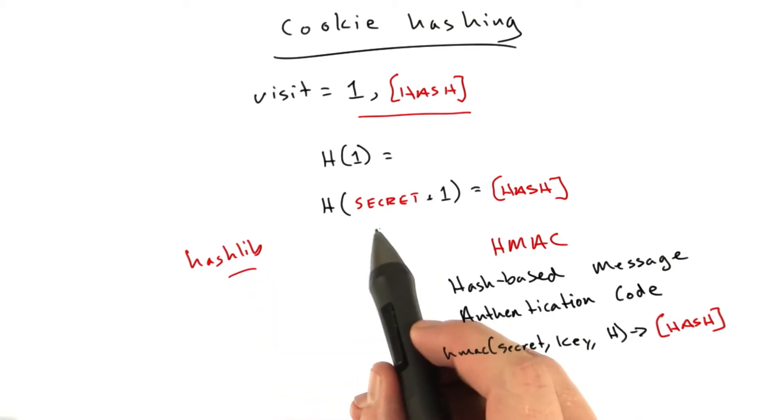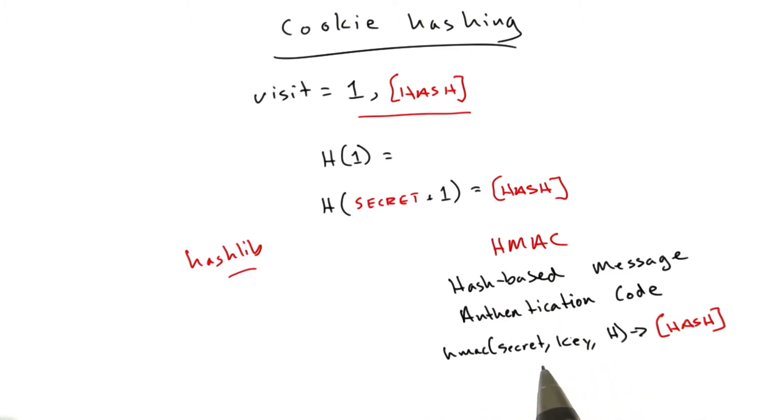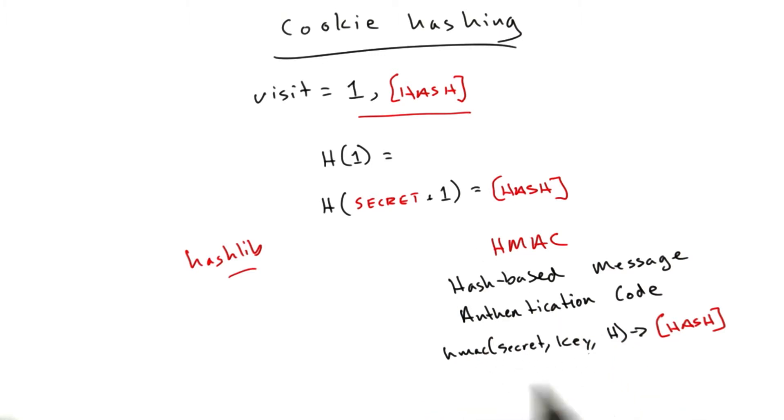You could just use our Hashlib function with secret plus value, and that'll get you pretty close. And for our purposes, it'll actually probably work just fine. But HMAC is the proper thing to use here.